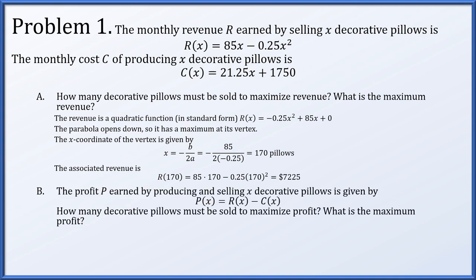Next, the profit p(x) is the difference between revenue and cost: p(x) = r(x) − c(x). How many pillows must be sold to maximize profit? We compute r(x) − c(x): 85x − 0.25x² minus (21.25x + 1750), which gives −0.25x² + 63.75x − 1750.